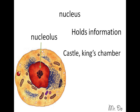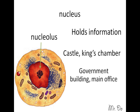So the cell would be like the city, and then we have the castle in the middle — that's the nucleus — and then where all the permissions and requirements are needed, the boss, that would be equivalent to the Nucleolus. And if it was a modern day city, then the Nucleus would be like a government building, and the Nucleolus is the equivalent of the main office.